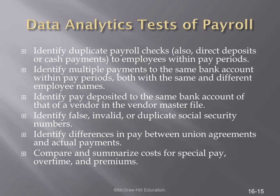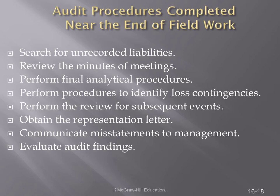Data analytic procedures we need to conduct as part of our audit include identifying duplicate paychecks to employees within a pay period, identifying checks issued to employees after they have been terminated, and comparing the payroll file to the vendor master file to determine if there are duplications. We also need to identify false, invalid, or duplicate social security numbers, identify differences in pay between union contracts and actual payments, and compare and summarize costs for special pay, overtime, and premium.